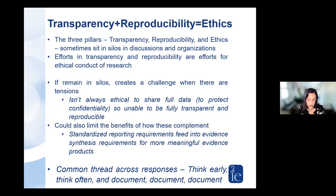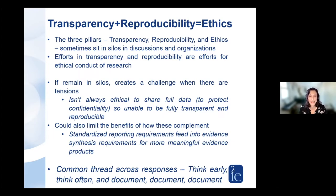When we think about transparency and reproducibility separate from ethical conduct of research, we limit the benefits of how these pillars complement each other. For example, more transparency can allow us to examine and document power dynamics and conflicts of interest in research teams and funders, which supports more ethical conduct of research. Ultimately, there's a common thread across all the risk mitigation responses: think early, think often, and document, document, document. We can't be transparent if we're not documenting first.